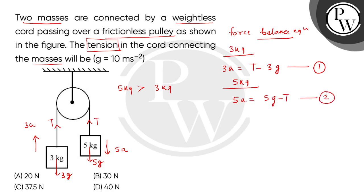Now if we add both equations, we will get 8A on the left and on the right side we will get 2G. So here we will get the acceleration as G by 4. This is equation number 3.